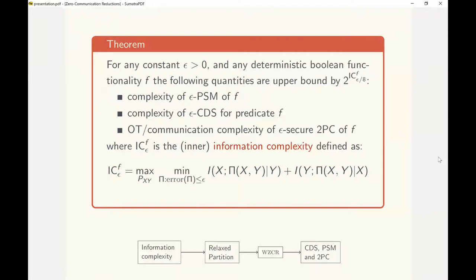Our construction follows the following sequence of connections. We use the bound on relaxed partition using information complexity of the function, which we described in a previous slide. We then construct a WZCR from the relaxed partition, and finally show CDS, PSM, and 2PC protocols can be constructed using the WZCR. In fact, this can be done from a ZCR itself.